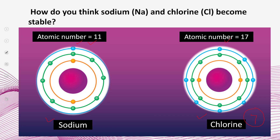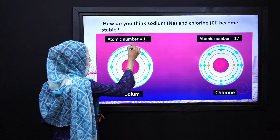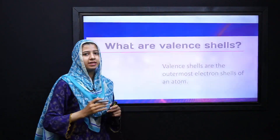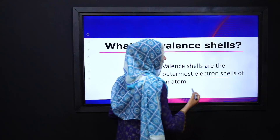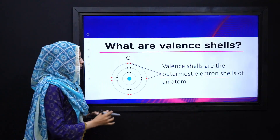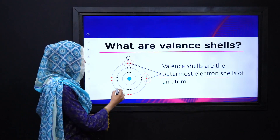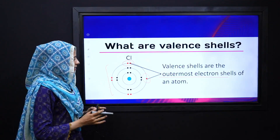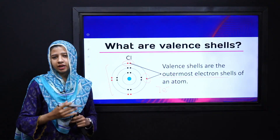Toh isi answer ko hum dobara verify karenge, but before verifying the answer we have to understand the term valence shell. Kya aap mujhe bata sakte hain ke what is meant by valence shell? Valence shell humare paas kisi bhi atom ke outermost shell ko kaha jata hai. The outermost shell of any atom is termed as valence shell. For example, chlorine ke valence shell ke andar seven electrons hain, toh hum keh sakte hain ke the valence shell of chlorine has seven electrons, or chlorine has seven valence electrons.